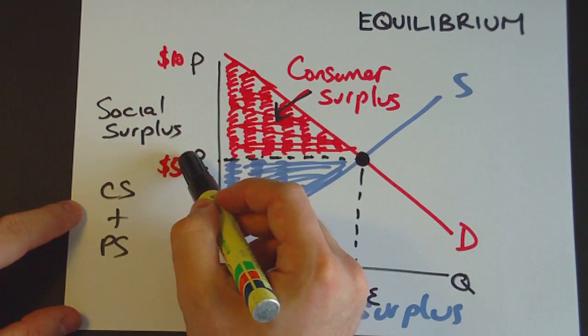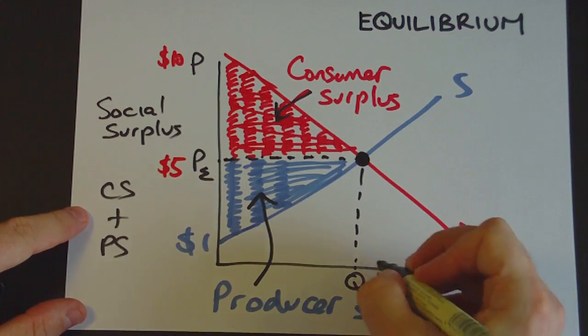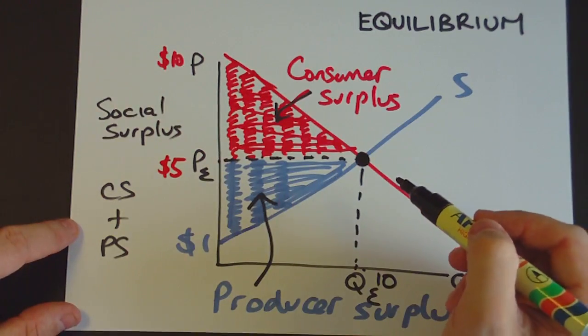we know this price is $10 here. This is $5 here. And let's say this quantity over here is 10 over this point. Then we can actually work out the area of this as the area of a triangle.